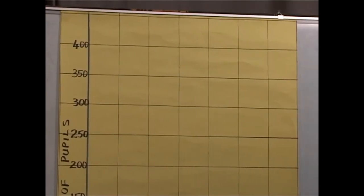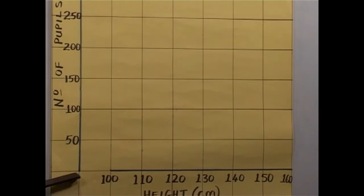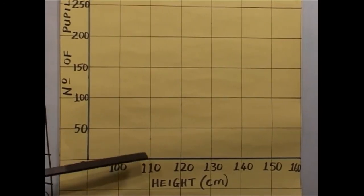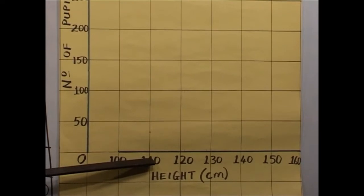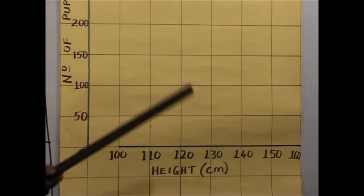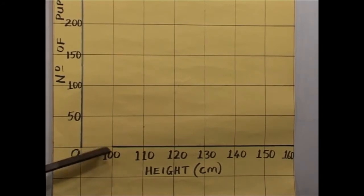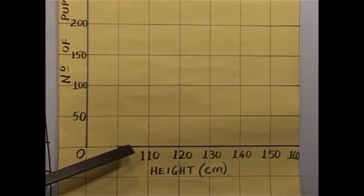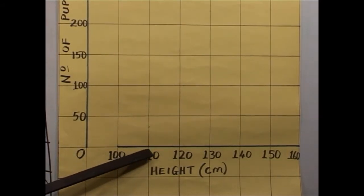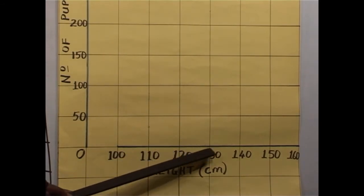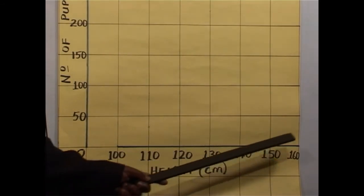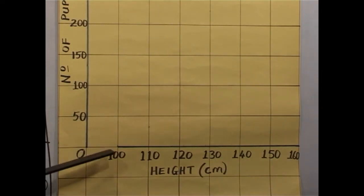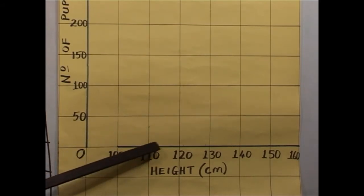Now, look at the scale of our graph paper. We are moving from 0 to 100, 100 to 110, 110 to 120, 120 to 130. By comparison, you can see that there is a mismatch. From 0, we are jumping to 100, and then from 100 there is a difference of 10. From 110 to 120, there is another difference of 10, then 10, 10, 10. So the only difference is at the bottom, at the start, from 0 to 100. These intervals are equal.